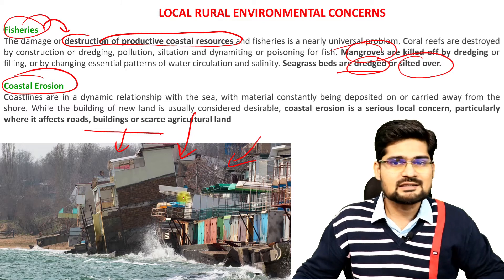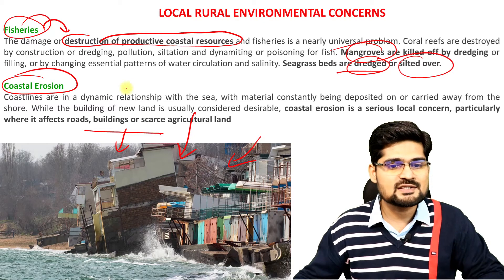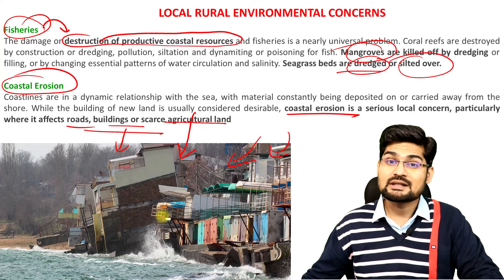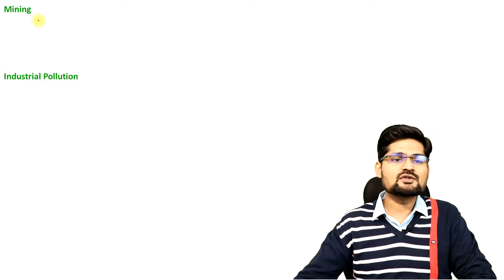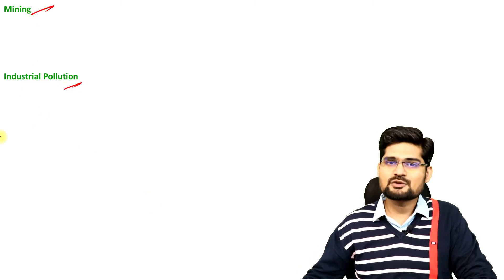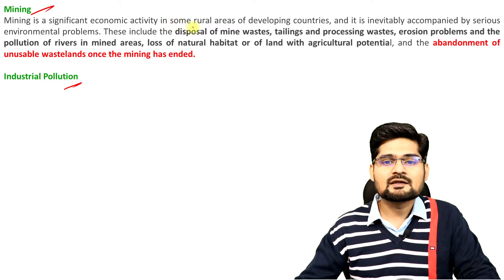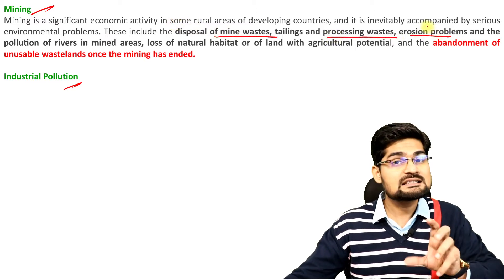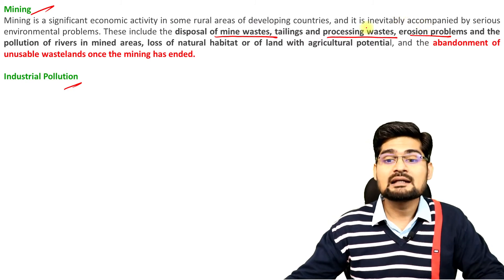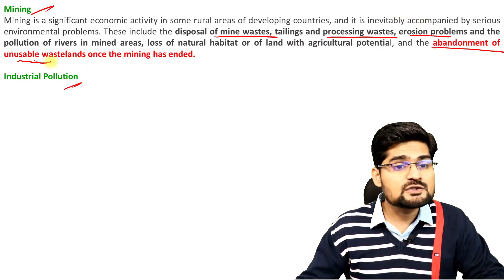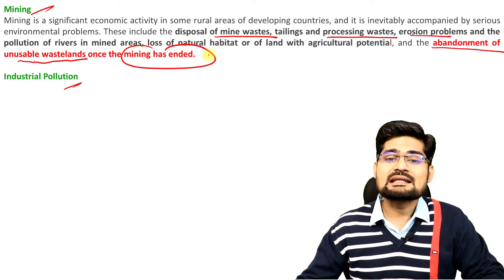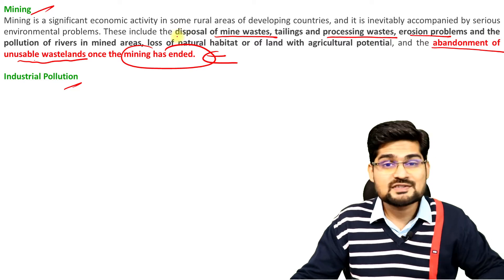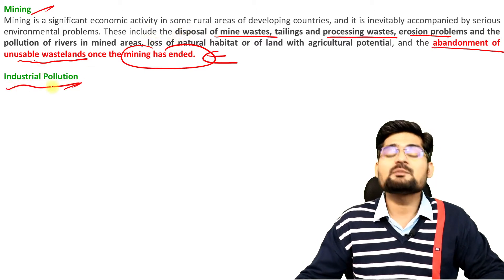If you look into Google search images, you'll find several such images where roads, buildings, cars, agricultural land, and coastal erosion are major problems in local areas of the world. Then there is mining and industrial pollution. In mining, the disposal of mine wastes, the tailings, process waste, and erosional problems are major problems. There is also abandonment of these unusable wastelands once mining has ended, which renders the land degraded. Land degradation is a big problem in mining areas.